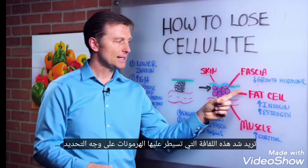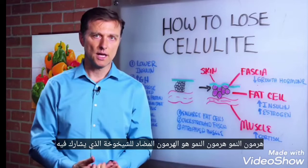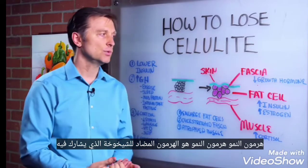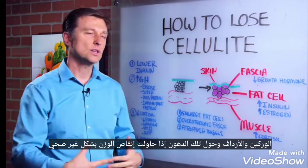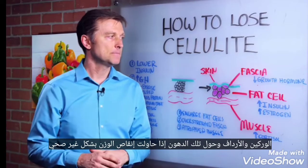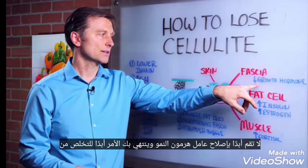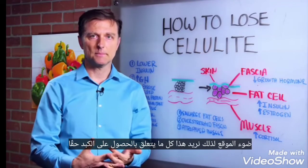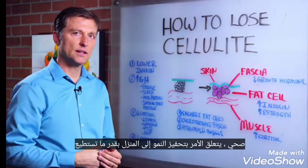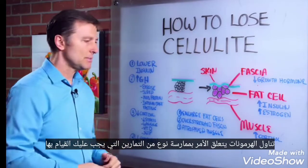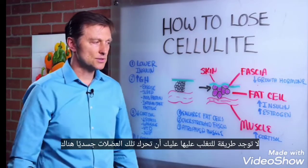Number two, we want to tighten up this fascia. Fascia is controlled by hormones, specifically growth hormone. Growth hormone is the anti-aging hormone involved with all proteins in the body — not just hair, skin, and nails, but the fascia around your hips, your buttocks, and around that fat. If you try to lose weight unhealthily, you never fix the growth hormone factor and you end up never getting rid of the cellulite. So this is about getting the liver healthy and triggering growth hormone as much as you can. It's not about taking hormones — you have to do some type of exercise. There's no way around it.